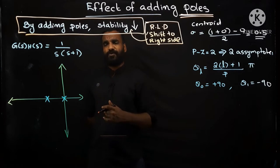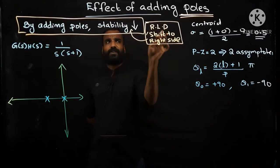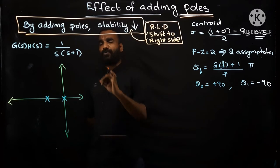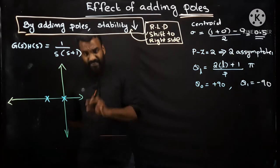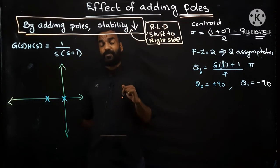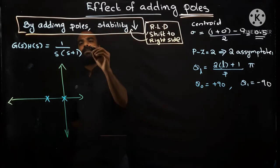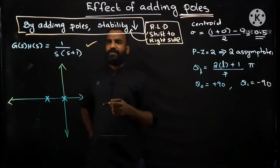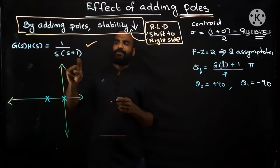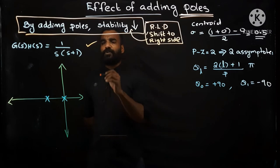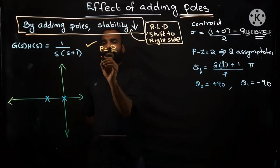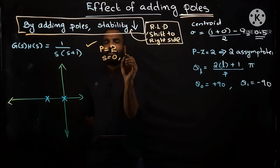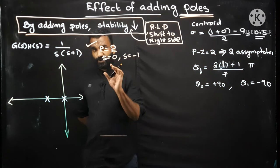We will show these things. If the points are coming towards the right side, chances are more for getting unstable. If it is on the imaginary axis it is critically stable; if we move further right the system becomes unstable; if we move left it becomes stable. So first of all keep this thing in mind: by adding a pole, the root locus diagram will shift towards right and stability will reduce. So this is the first case — a second order system 1/(s(s+1)), with two poles at s=0 and s=-1.